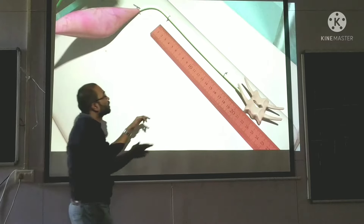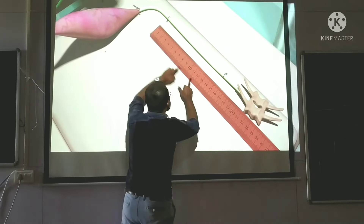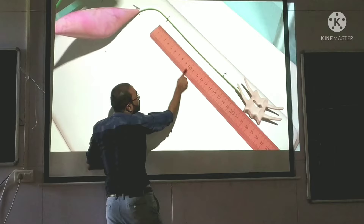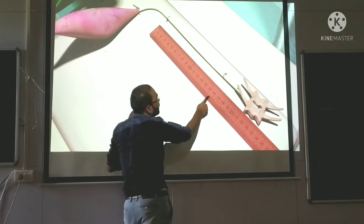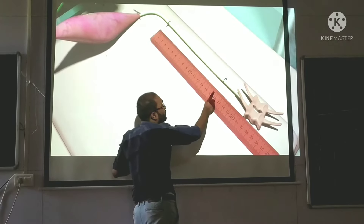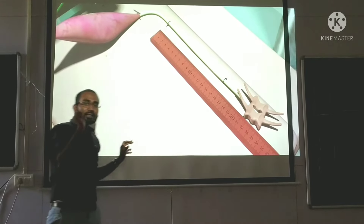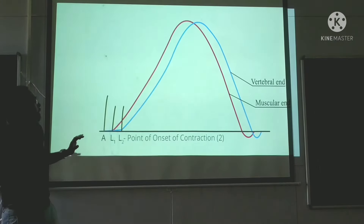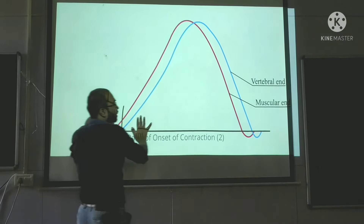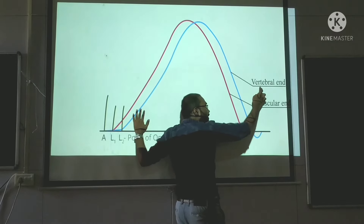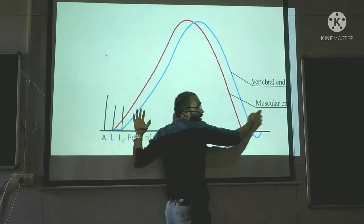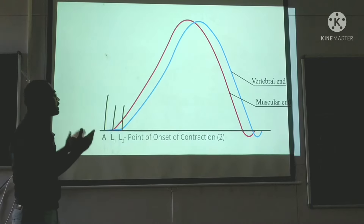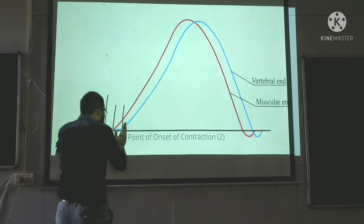Then what you have to do is measure this — you scale it. This comes around 15 centimeters. After measuring this, you compare both the graphs — the vertebral end and the muscular end. Here the comparison looks something like this.